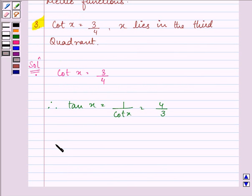According to one of the identities that is known to us, it says 1 plus tan square x is equal to sec square x.